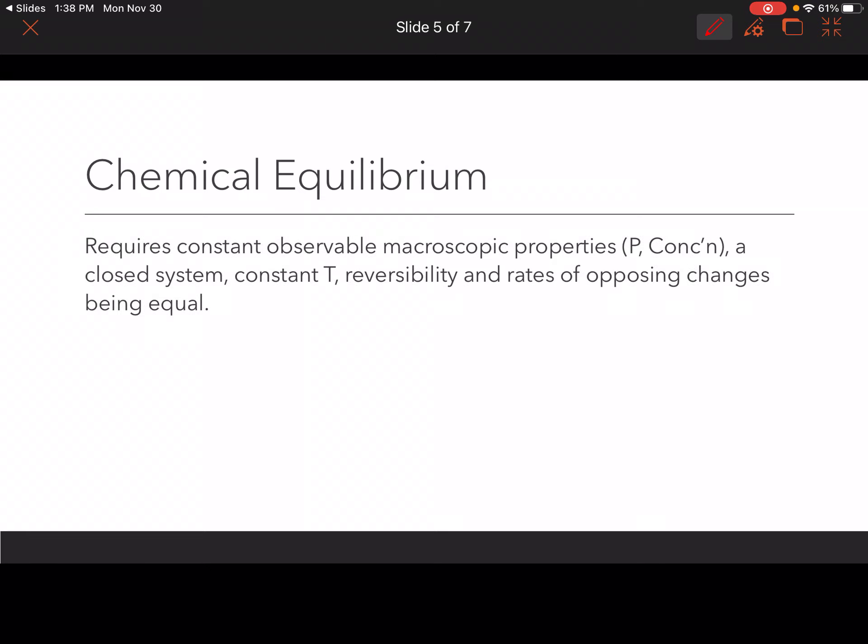Now, in terms of a chemical equilibrium, this requires constant observable macroscopic properties. So this would be pressure, concentration, etc. You need a closed system, you need a constant temperature, you need reversibility, and rates of opposing changes being equal. So we're going to take a look at here, we've got hydrogen gas and chlorine gas in equilibrium with hydrochloric acid in the gas form.